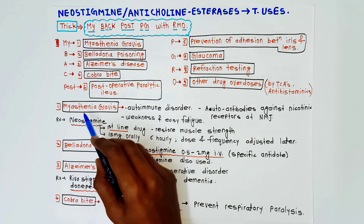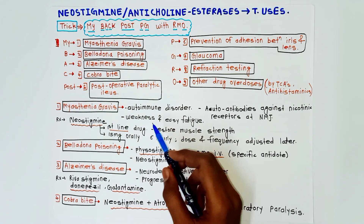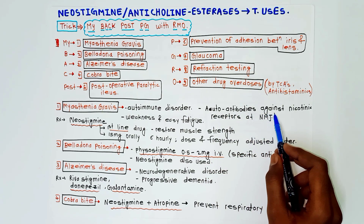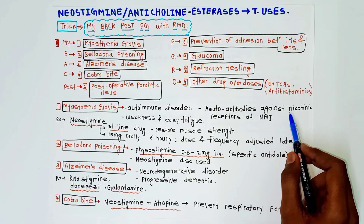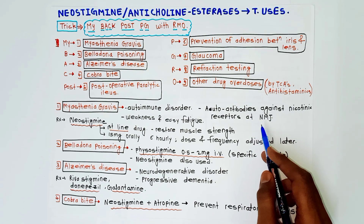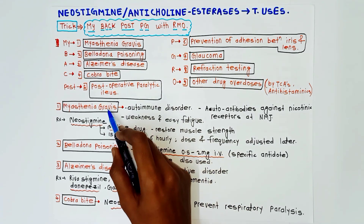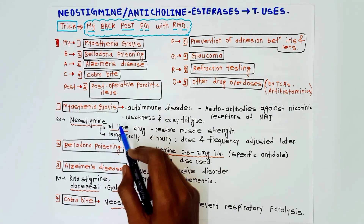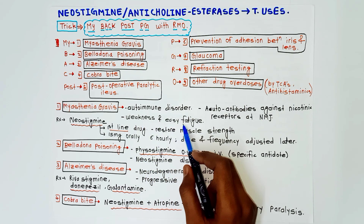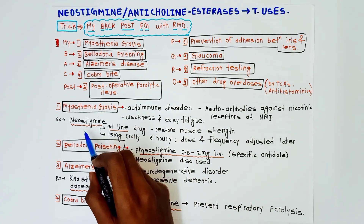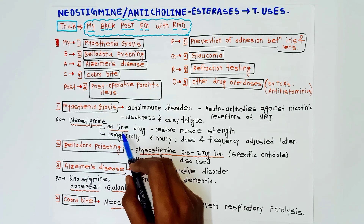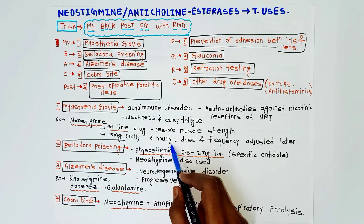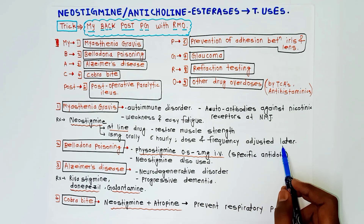First, myasthenia gravis: it is an autoimmune disorder in which auto-antibodies are formed against nicotinic NM receptors at the neuromuscular junction. There is weakness and easy fatigability of the muscles. Neostigmine is used as a first-line drug — it restores muscle strength. The dose is 15 mg orally, 6-hourly, adjusted later based on the condition.